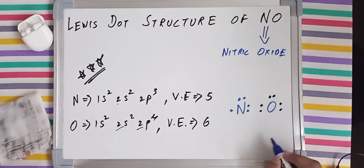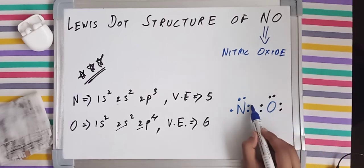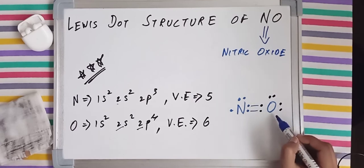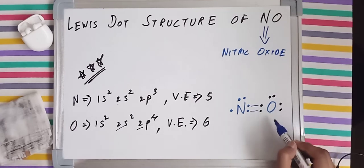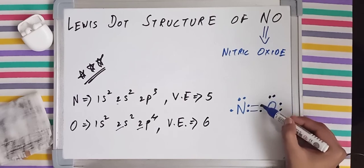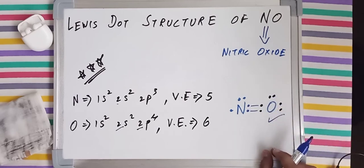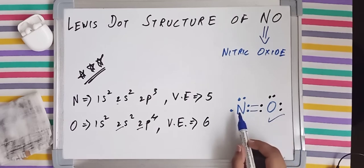Now see, oxygen wants two more electrons so that it will be able to complete its octet, which means it will have eight electrons in its outermost shell, so it will make two bonds with nitrogen. Now let's count the number of electrons oxygen now has: one, two, three, four, five, six, seven, eight. So oxygen has completed its octet.